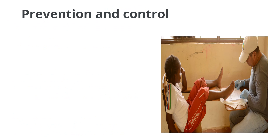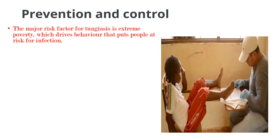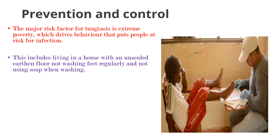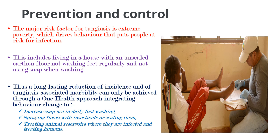When it comes to prevention and control of tungiasis, the major risk factor is extreme poverty, which drives behavior that puts people at risk for infection. This includes living in houses with unsealed earthen floors, not washing feet regularly, and not using soap when washing. A long-lasting reduction in incidence and tungiasis-associated morbidity can only be achieved through a one-health approach integrating behavior changes to increase soap use in daily foot washing, spraying floors with insecticides or sealing them, and treating animal reservoirs and infected humans.